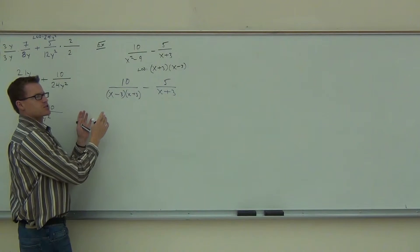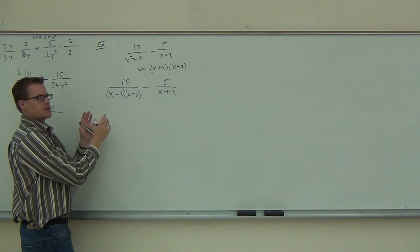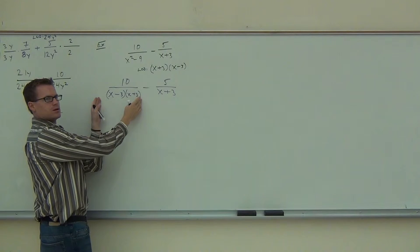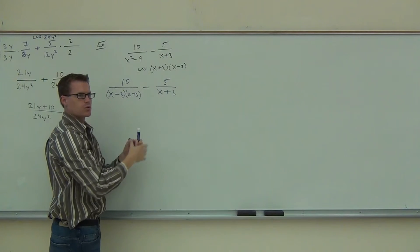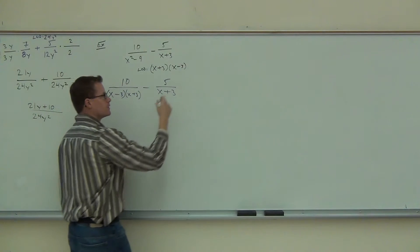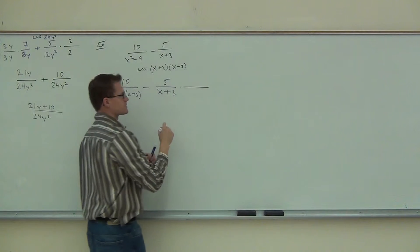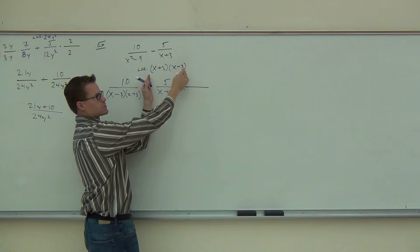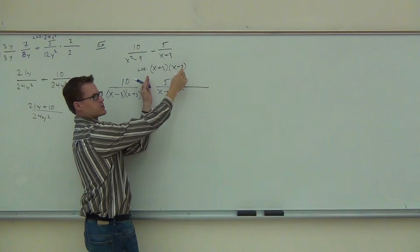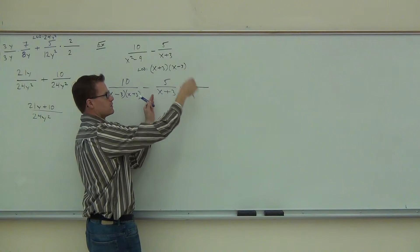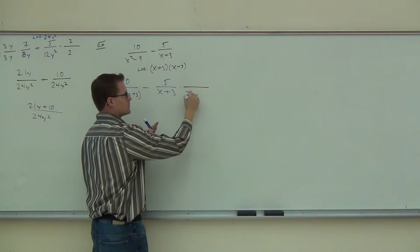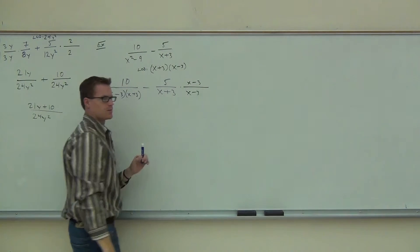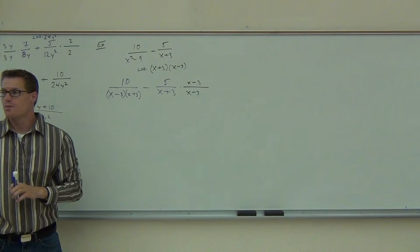Now we're going to multiply each fraction by the appropriate thing to make sure we get our LCD on the denominators. On the left fraction, do I need to multiply by anything? No—it already has the full LCD. On the right-hand side, though, we're missing something. I have an x plus 3, and my LCD is x plus 3 times x minus 3, so what am I missing? X minus 3.